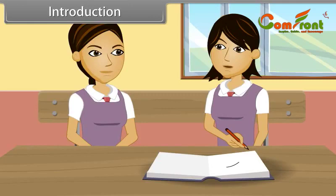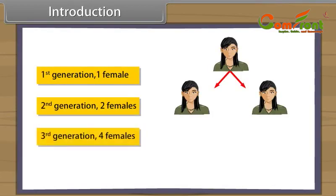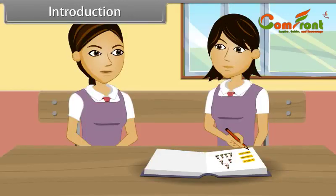Yes, it is possible, if the generation number is known. First generation: one female. Second generation: two females. Third generation: four females. Wow, that was so simple. Do you know what we call such progressions? Such a progression is a geometric progression. Come, I will tell you more about this.